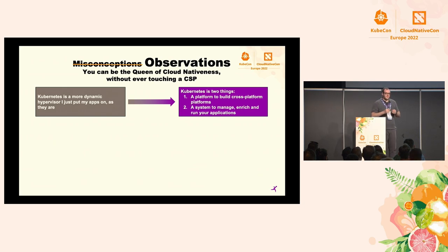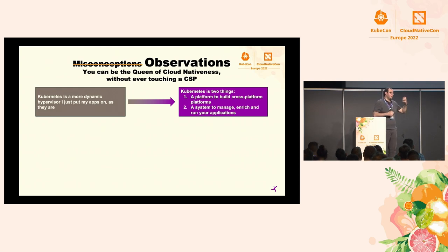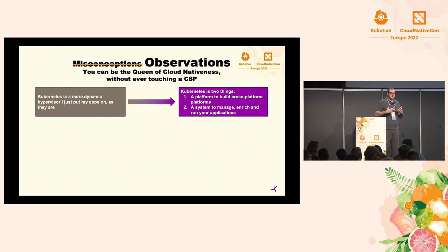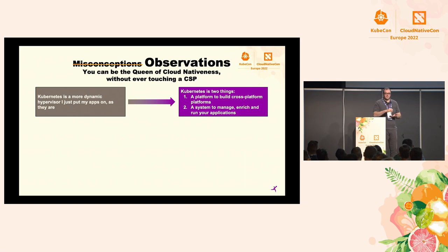Kubernetes is a platform — something which helps you build your own platform. Or if you want to add another layer, it's a platform to build cross-platform platforms. With one solution you can build something that runs the same way on your virtualized infrastructure, on bare metal, and in the cloud provider, giving your developers the same experience. Kubernetes is a system to manage your workload and resources, and it runs your applications — meaning it takes care of all the complexity around security, networking, and authorization. All the heavy lifting that would normally be a year-long project in classical infrastructure.